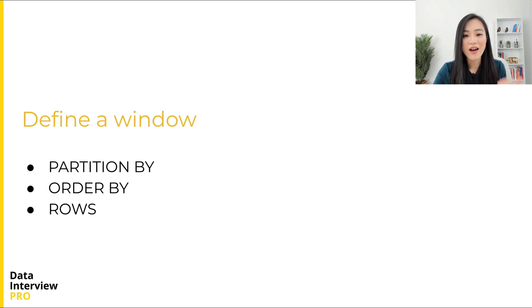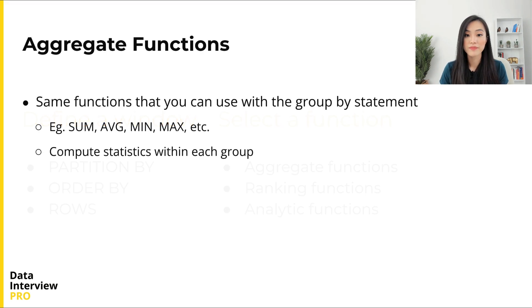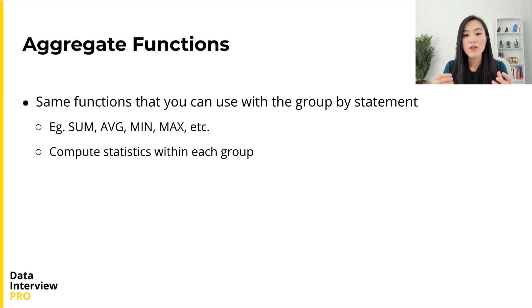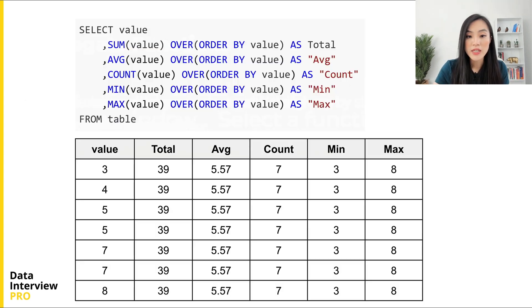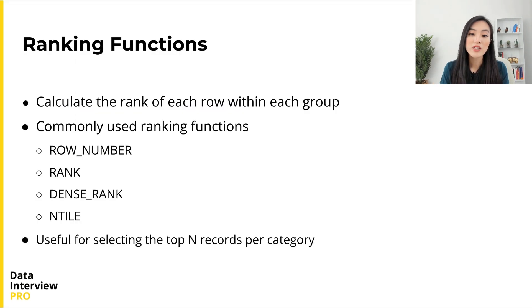Those are the three arguments of the OVER clause used to define a window frame. Now let's talk about different functions and how the results differ using different window functions. There are three kinds of functions: aggregate functions, ranking functions, and analytic functions. Commonly used aggregate functions include AVG, SUM, COUNT, MIN, MAX, standard deviation, and variance. Basically we use them to calculate the corresponding aggregate value within each group. In the earlier example without PARTITION BY, all rows are a single group, and the output shows different aggregate values for that group.